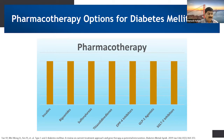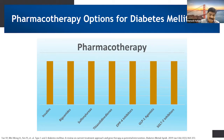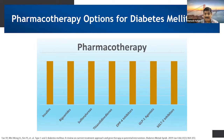Coming to the thiazolidinediones — examples like pioglitazone — these are a newer class of oral anti-diabetic medications that improve metabolic control in Type 2 diabetes mellitus through increasing insulin sensitivity. The next class is DPP-4 inhibitors, which increase incretin levels such as GLP-1 and GIP. These inhibit glucagon release, which in turn increases insulin secretion, decreases gastric emptying, and decreases blood glucose levels. Medications in this class include sitagliptin and vildagliptin.